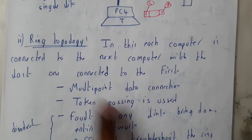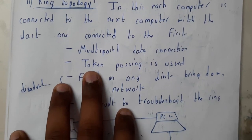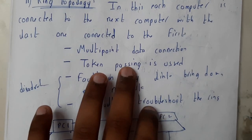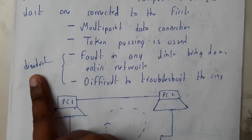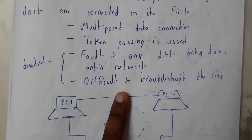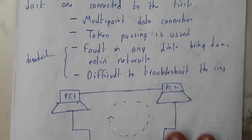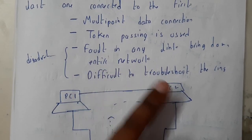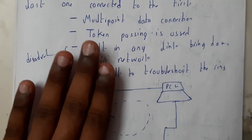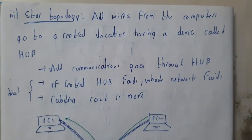We call this a multiport data connection. In ring topology we pass tokens — we will learn about token passing methods, which is a switching mechanism. The major disadvantage is that any disconnection between devices will cause the whole network to collapse. Fault in any link brings down the entire network, and it is really difficult to troubleshoot in ring topology.